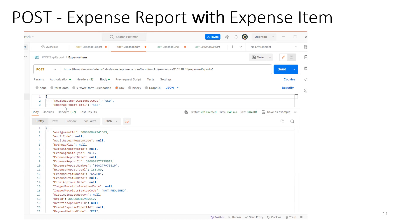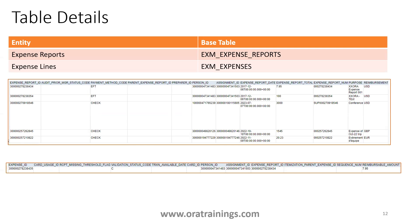There are a couple of tables available, but the main ones are: the expense reports table — EXM_EXPENSE_REPORTS — for the report header, and the expense lines table — EXM_EXPENSES — for the line items. The linkage between the header table and the lines table is the column EXPENSE_REPORT_ID. EXPENSE_REPORT_ID is the primary key in EXM_EXPENSE_REPORTS, and EXPENSE_ID is the primary key in EXM_EXPENSES.